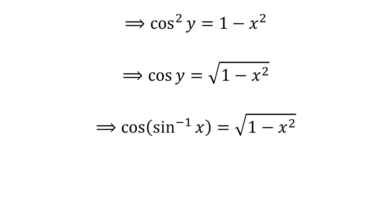Since we had assumed y is equal to arc sine of x, this implies cosine of arc sine of x is equal to square root of 1 minus square of x. That's all — we found the value of cosine of arc sine of x, which is what we set forth to do.